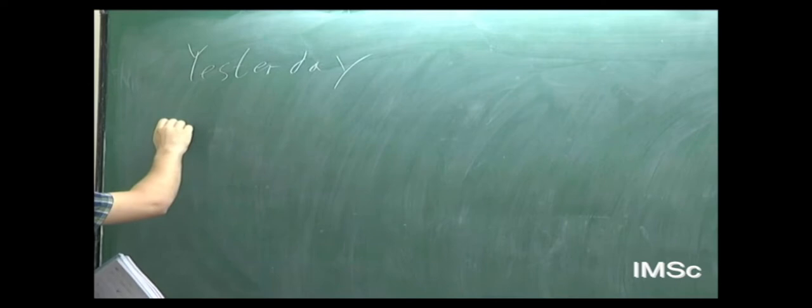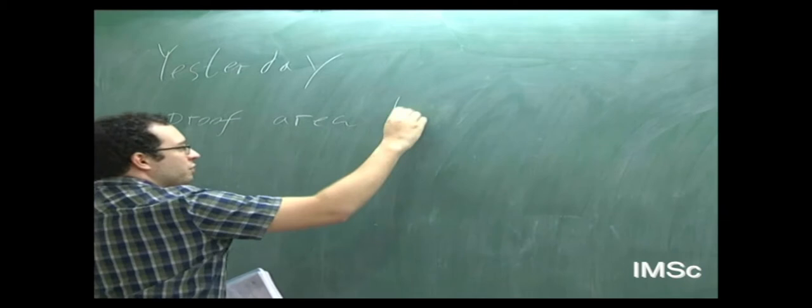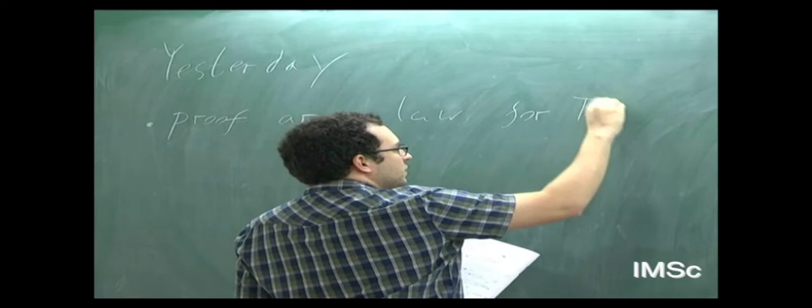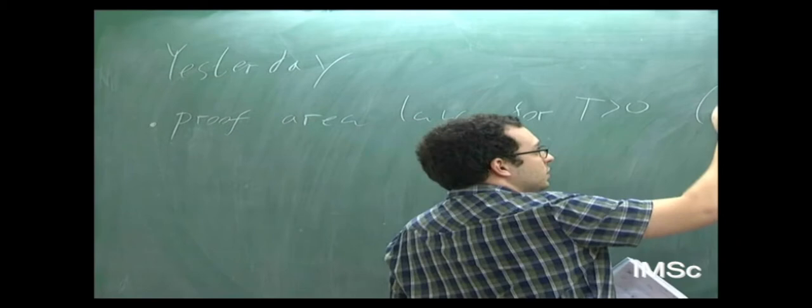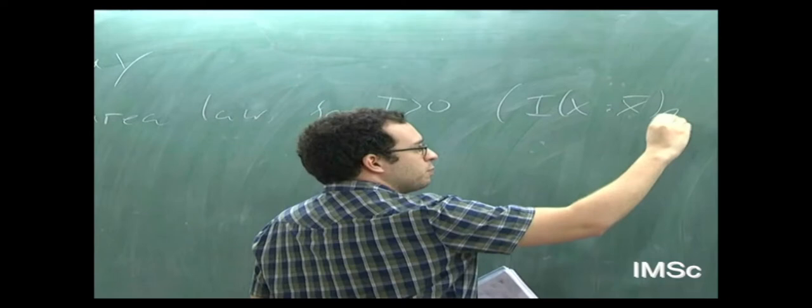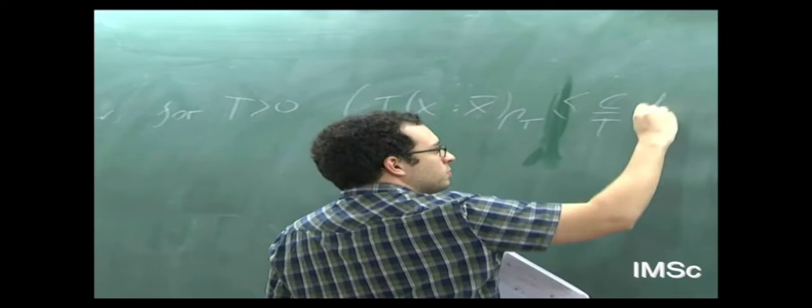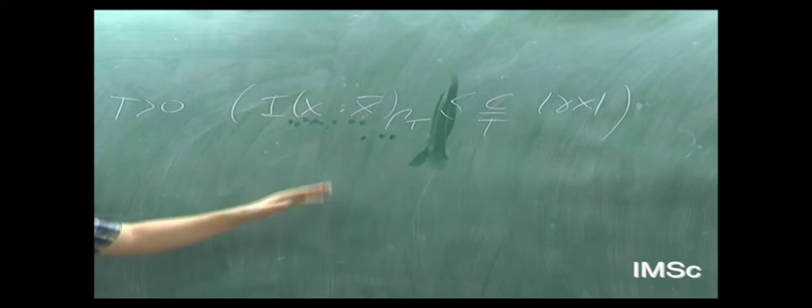OK, so yesterday and on Monday, let's remember what we saw. First, I showed you a proof of area law for temperature bigger than zero, which is when you have a thermal state — a mixed state — so we have to use the mutual information. We use the mutual information between X and its complement, and we saw it goes like some constant over temperature times the area. And it was not hard — basically a change principle and some basic properties of relative entropy.